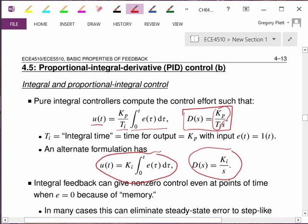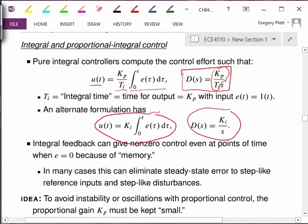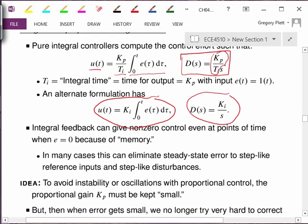The big advantage of integral feedback is that it can give control, a non-zero control effort, even at points in time when the error is zero instantaneously, because it remembers that the error has not always been zero in the past. In many times, this can eliminate steady-state error to step-like reference inputs and step-like disturbances.